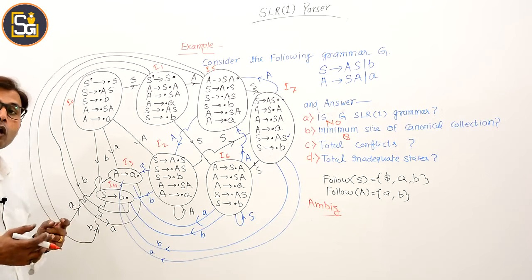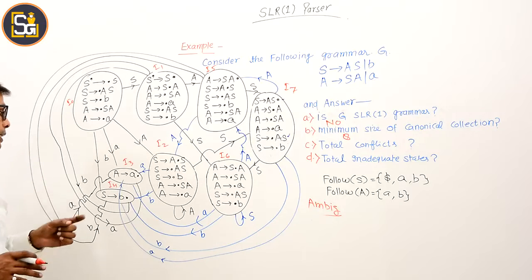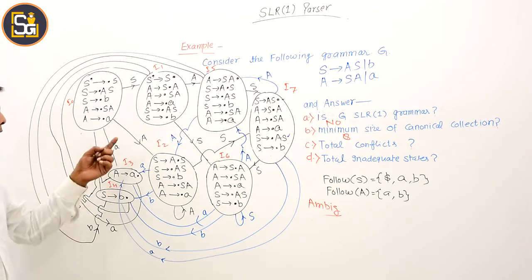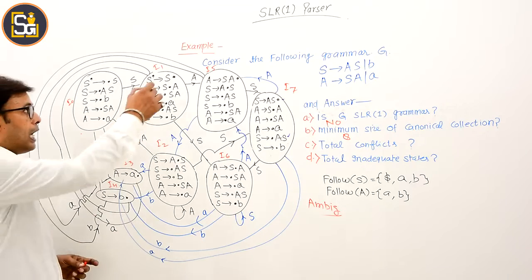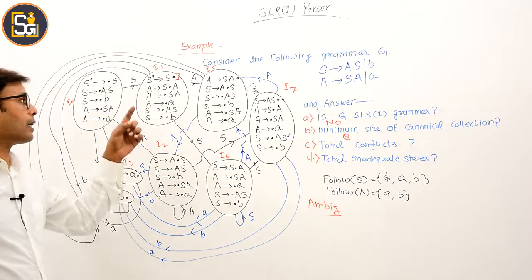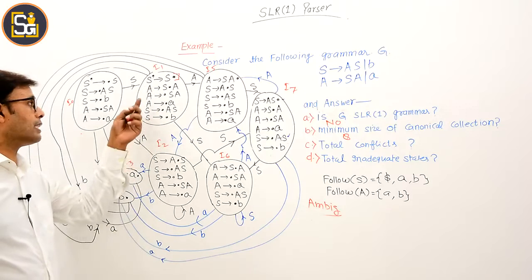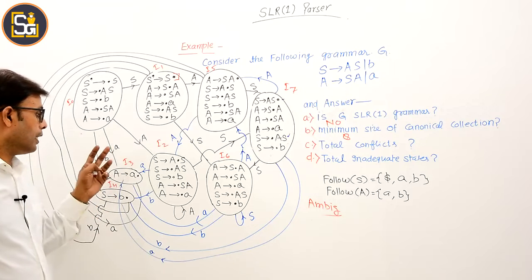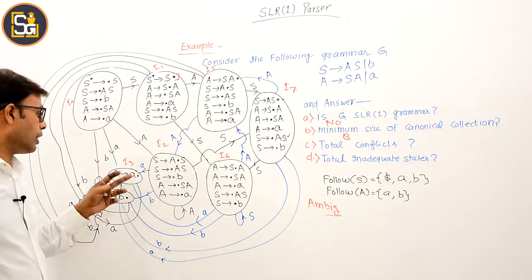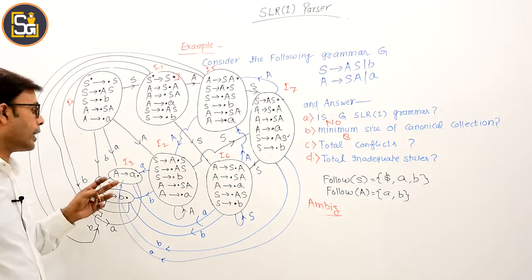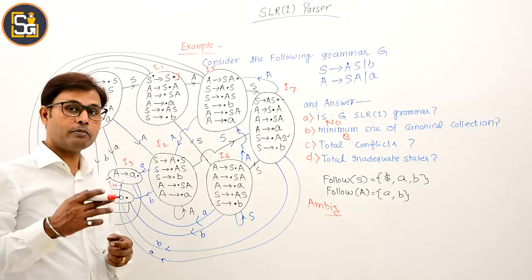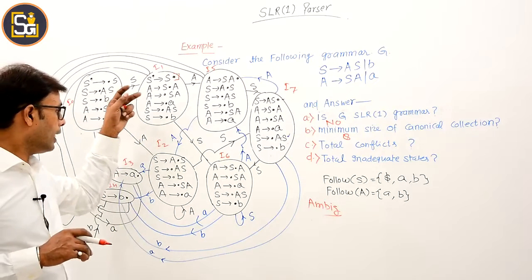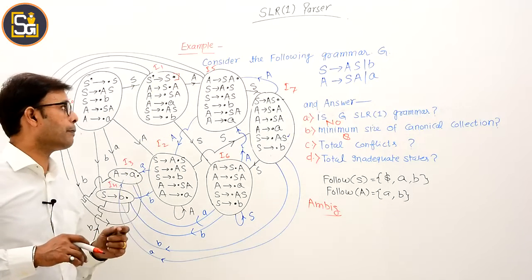A conflict can only occur where there is a reduce move. In I0, there is no possibility of conflict. In I1, there is a reduce move but it is not part of the grammar, so nothing to check. In I2, there is no reduce move. In I3 and I4, there are reduce moves but only a single LR(0) item — a conflict requires at least two entries.